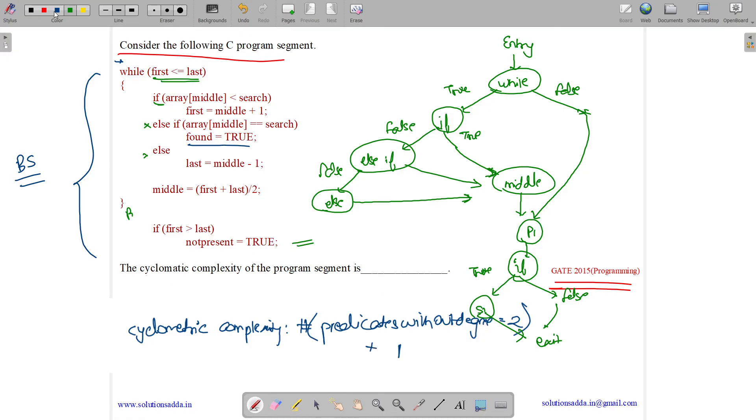Now the out degree 2. So which has out degree 2? While has this one out degree, this one out degree. So while has an out degree 2. If has 1 and 2, 2 out degree. Else if has 2. Else has just 1. And if has 2 for true and false. The number of predicates with out degree 2 are 1, 2, 3, and 4. So we have 4 predicates with out degree 2, and plus 1 for this. So correct answer is 5. So we have cyclomatic complexity of 5.